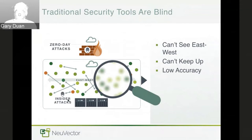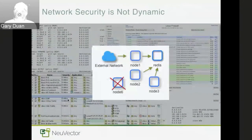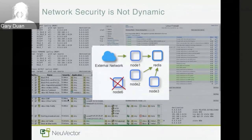Traditional network security devices don't have visibility into the container lifecycle. Containers are relatively short-lived — they can scale up and down quickly. As you can see from screenshots of traditional security devices, in order to keep up with the changes of these very small applications, those devices have to create hundreds of policies. If you have hundreds or thousands of container hosts, this approach simply cannot scale.